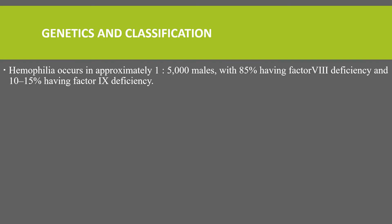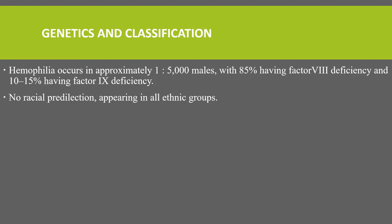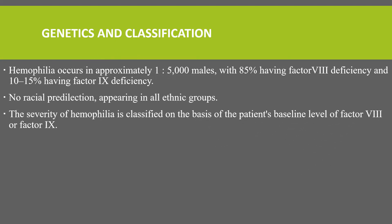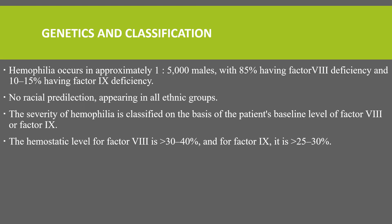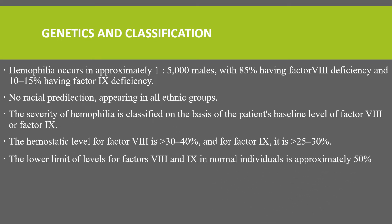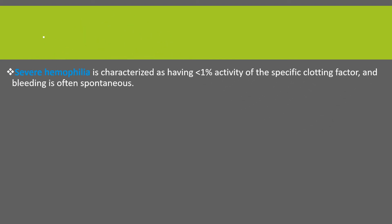Regarding genetics and classification, hemophilia occurs in approximately 1 in 5,000 males, with a predominance of hemophilia A — factor 8 deficiency — responsible for around 85 percent of cases, and factor 9 deficiency accounting for 10 to 15 percent. There is no racial predilection; it appears in all ethnic groups. The severity of hemophilia is classified based on the patient's baseline level of factor 8 or factor 9. The hemostatic level for factor 8 is around 30 to 40 percent, and for factor 9 around 25 to 30 percent, while the lower limit of normal is approximately 50 percent.